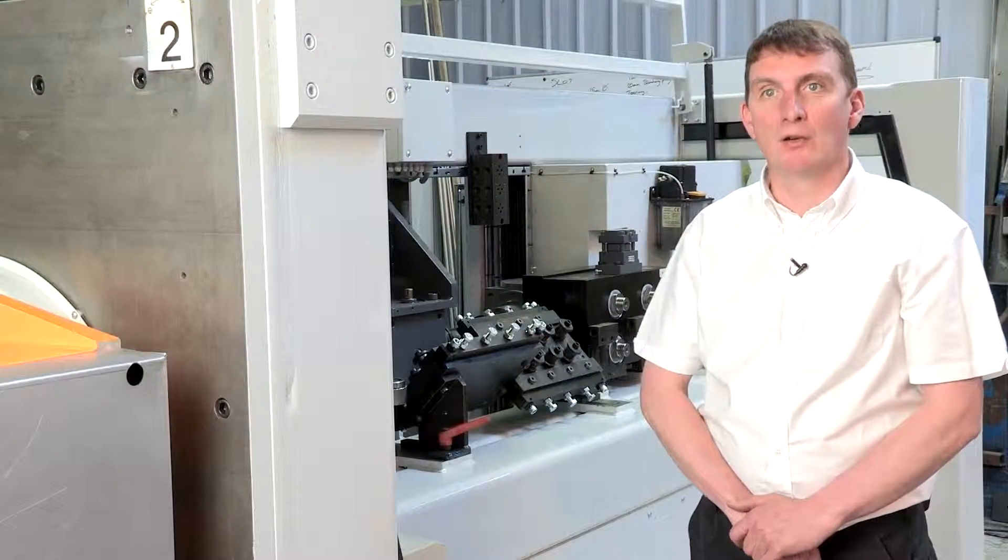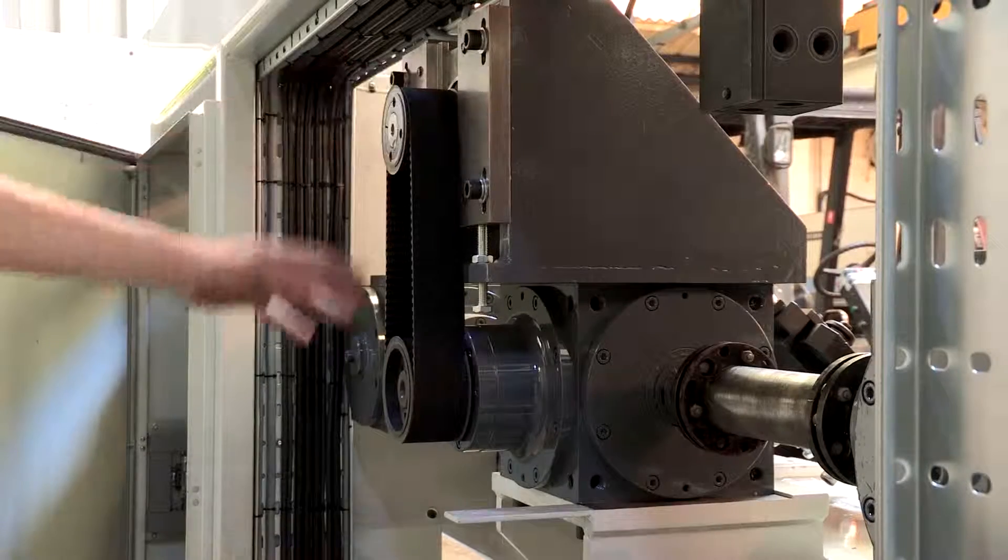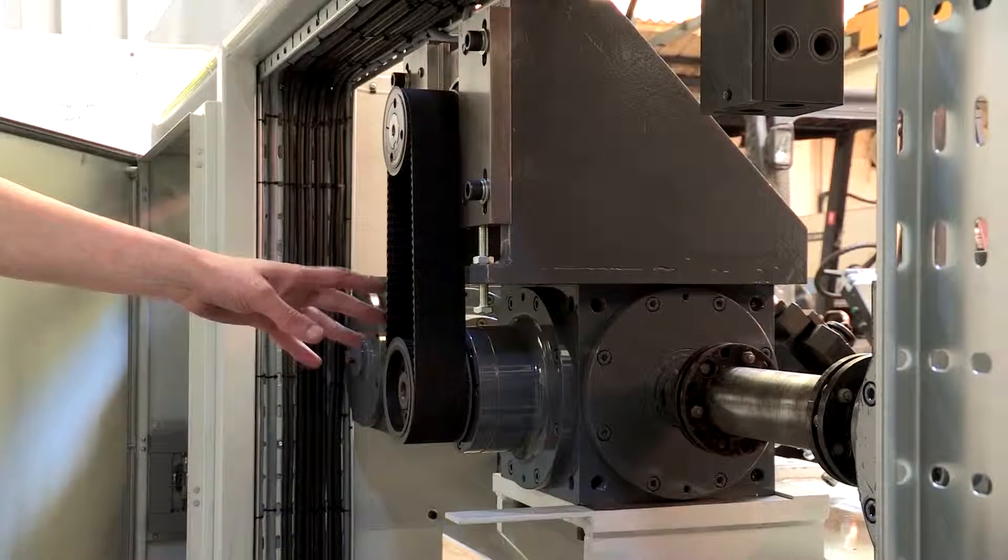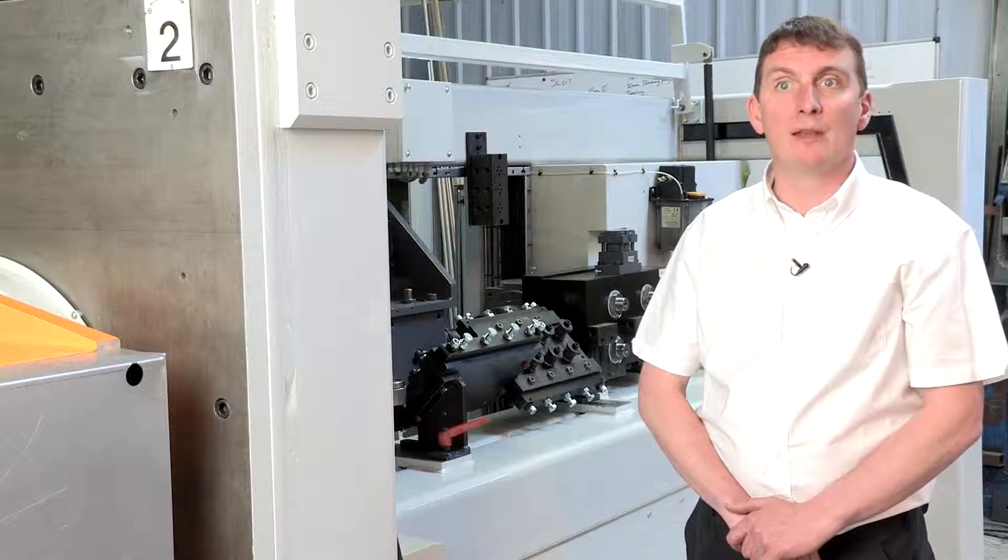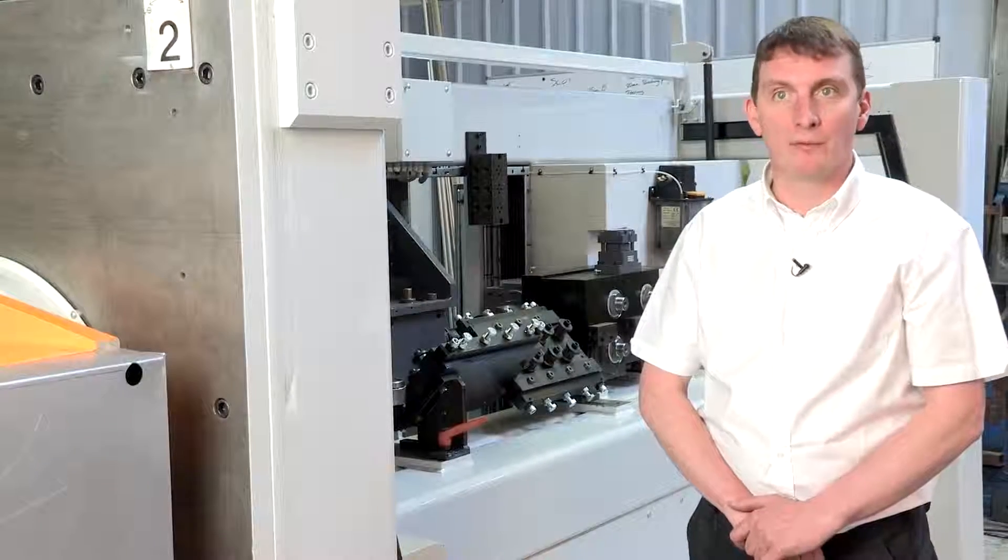We would strip the machine down, check all of the surfaces, all the wear surfaces, all the mounting points, just to make sure that they're in good shape. And then if there's any repairs required, we will do that before we start assembling.